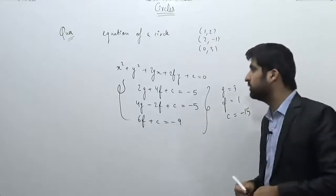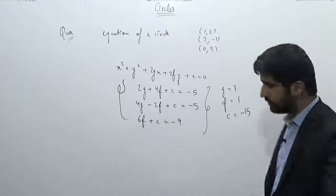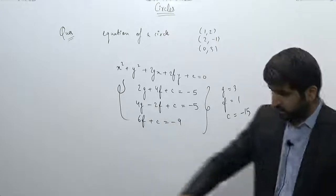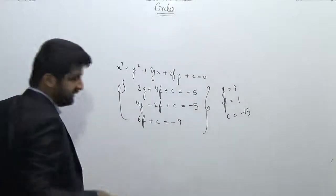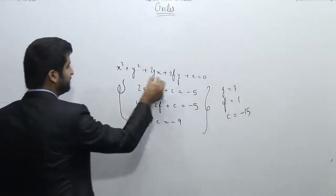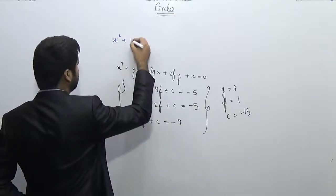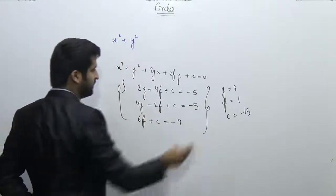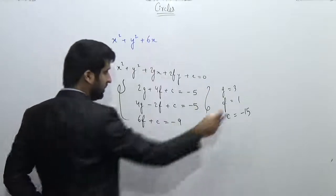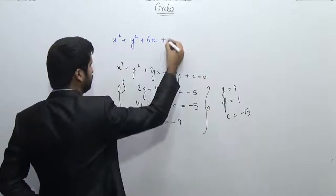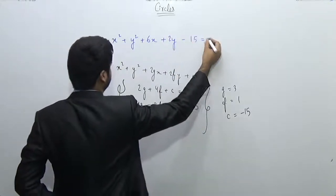Now we substitute the values of g, f, and c to write the equation of the circle. The value of g is 3 and f is 1, so the equation becomes: x² + y² + 6x + 2y - 15 = 0.